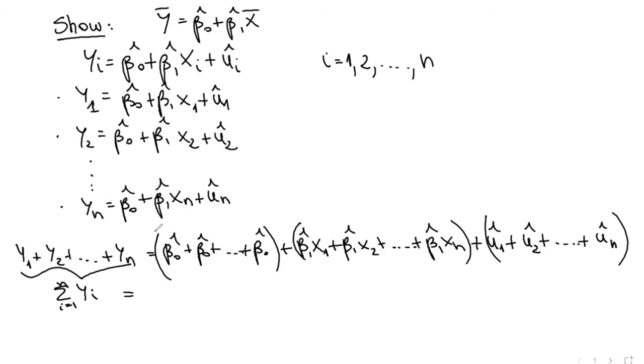Then all of this is just n times beta naught hat, because I'm summing beta naught hat n times. So this is just going to be n times beta naught hat.